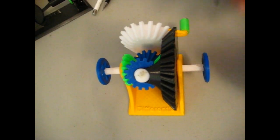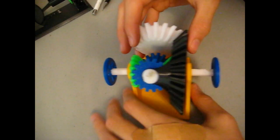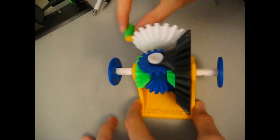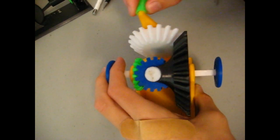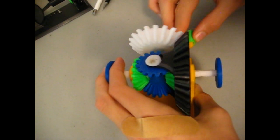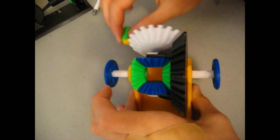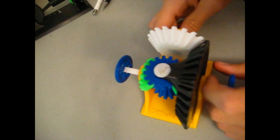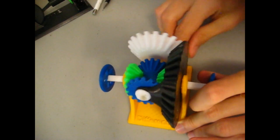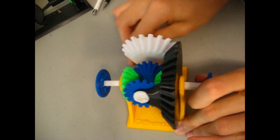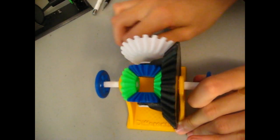And finally, the differential itself. Slow down one wheel here, and the other one speeds up. Slow down this wheel over here, and get a hold of it. And the other wheel speeds up. Just like when you're doing a turn.